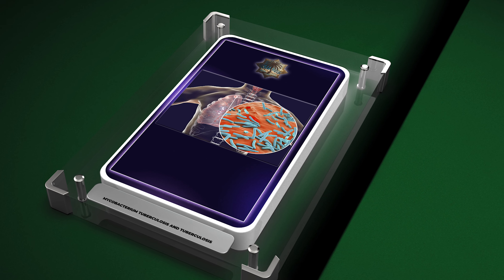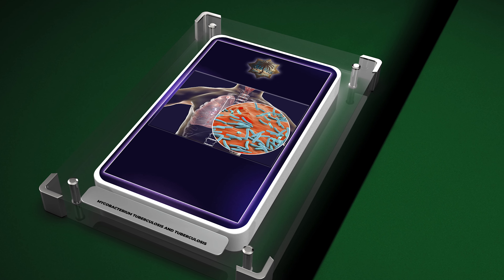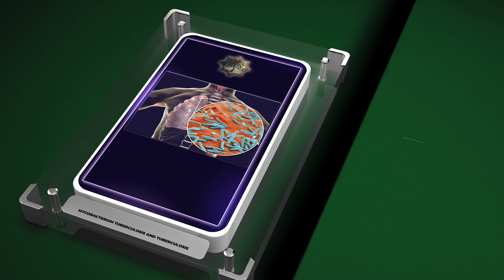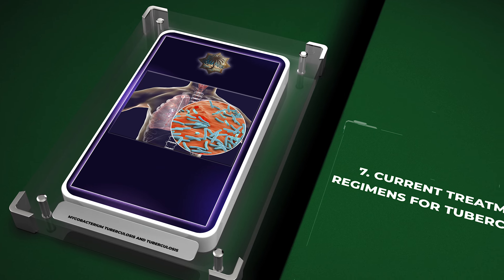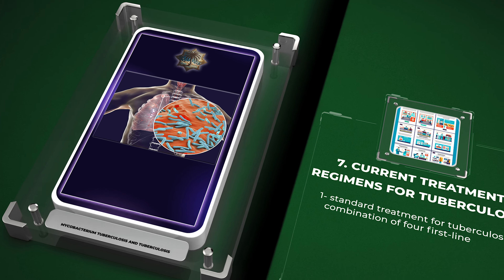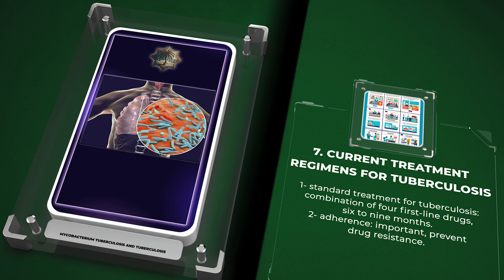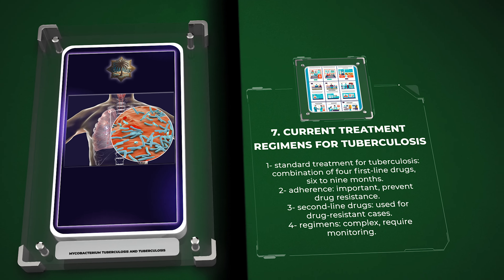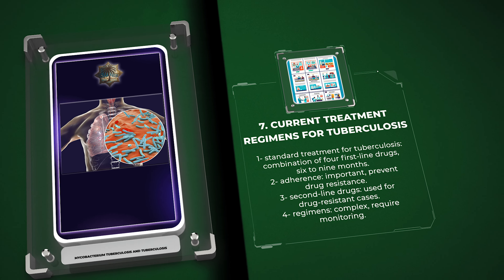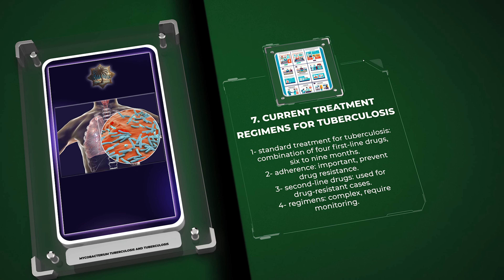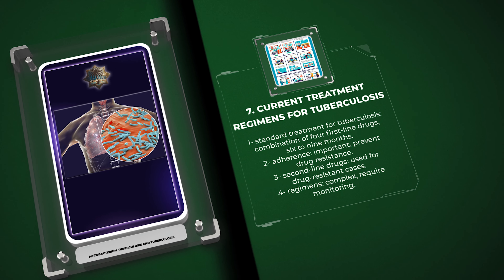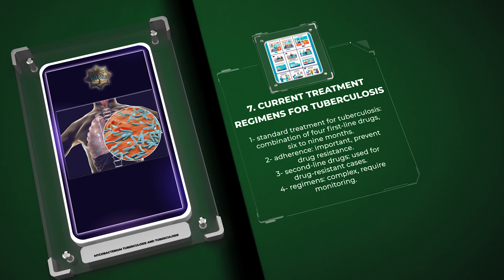The standard treatment for tuberculosis involves a combination of four first-line drugs for six to nine months. Adherence is important to prevent drug resistance. Second-line drugs are used for drug-resistant cases. These regimens are complex and require monitoring.